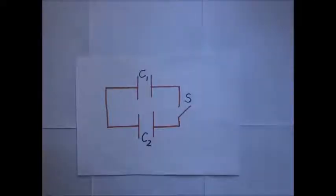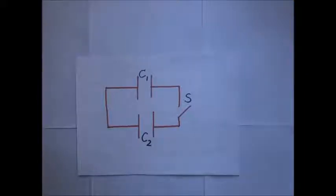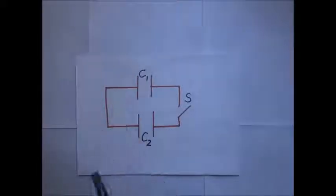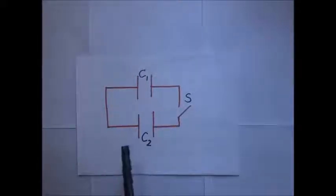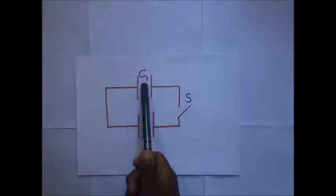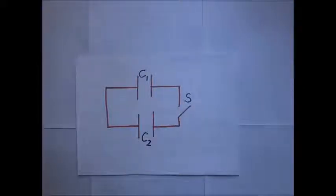Today we get to look at what happens when we join two capacitors. The diagram on your screen shows capacitors C1 and C2. When we close switch S, these two capacitors are joined together.